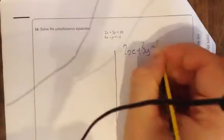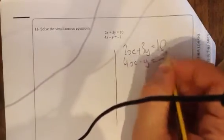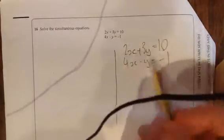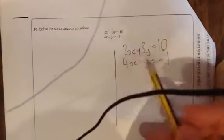Now, 2x plus 3y equals 10. 4x minus y equals negative 1. Now, we need to either make your x's or the y's the same. I naturally go for the x's, but you want to see which one makes more sense.